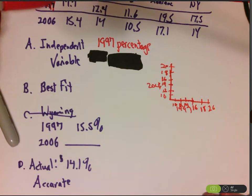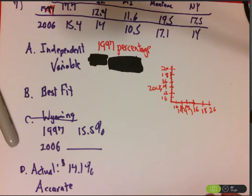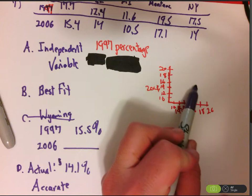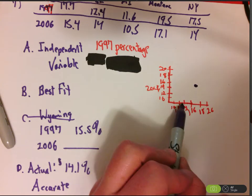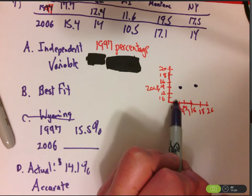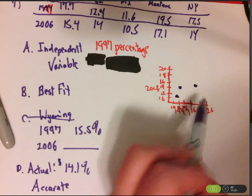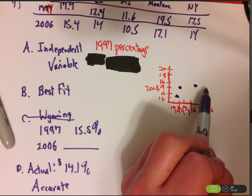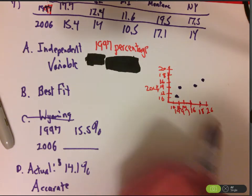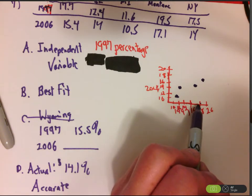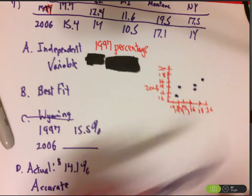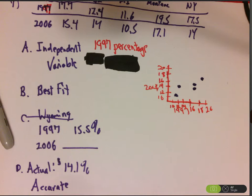So from here, I'm going to make a dot at 17.7 and 15.4. So just make a general area, so somewhere in here, that'll be my first dot. My second dot will be at 12.4 and 14, so somewhere like right in here. And then 10.5 and 11.6, so somewhere in here. 19.5 in Montana becomes 17.1, so somewhere like in this general vicinity. And then 17.5 and 14, so like right in here. So that's kind of what the scatterplot looks like. It's not the best scatterplot ever, but it looks okay.